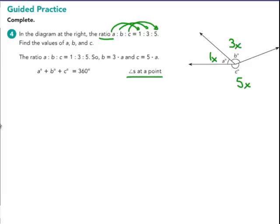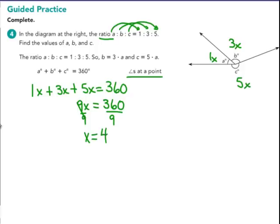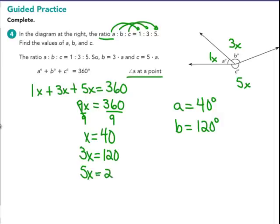So A is 1X, B is 3X's, and C is 5X's. All together have to equal 360. So when I add those up, I get 1 plus 3 plus 5 is 9X's has to equal 360. Solve the multiplication equation by division, and you get that X, one of the X's, has to equal 40. So A equals 40 degrees because it's the 1X. B is 3X, 3 times 40, that's 120. So B is 120 degrees. And C is the 5X, 5 times 40, that's 200.